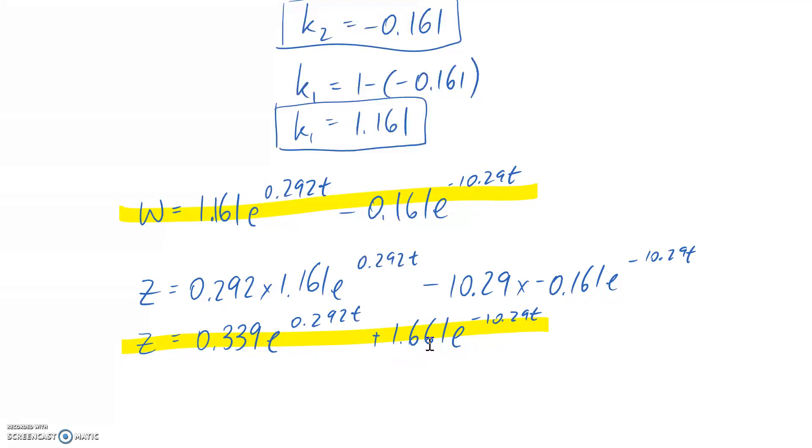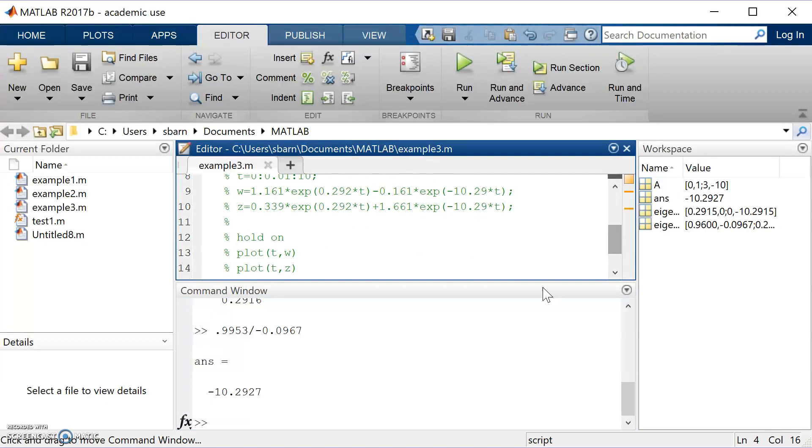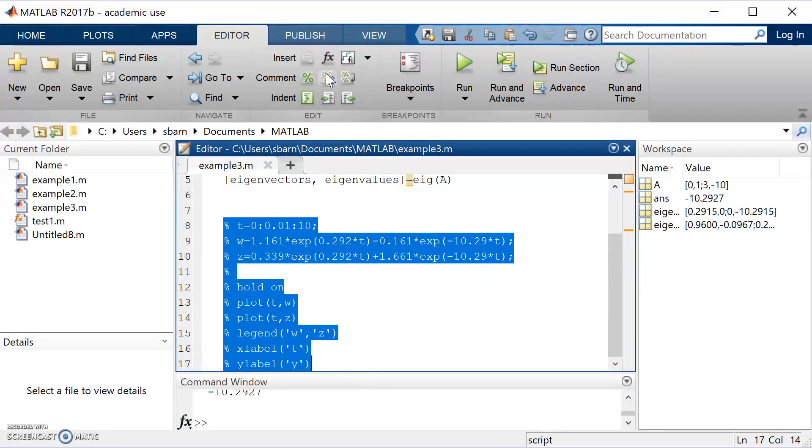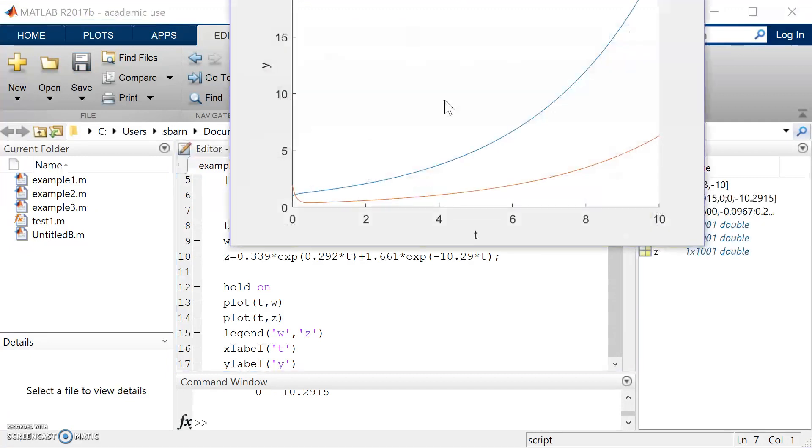So what we can do is actually go and plot our solution and see if our initial conditions were met. So that's what I've done underneath here. At the moment it's commented out, so I will de-comment it. So all I've done is to define a time vector, so from 0 to 10. I've defined my W and my Z functions based on what I found manually earlier, and then I've plotted them all on the same graph. So if I run this now, what I should see is a plot come up.